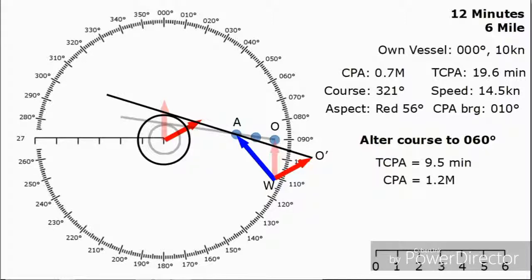From all this, we can see after our course alteration, the new TCPA is going to be 9.5 minutes time, and the CPA is going to be 1.2 miles. We've increased our CPA, but reduced the time to the closest point of approach, so we're going to be out of the situation a lot quicker.